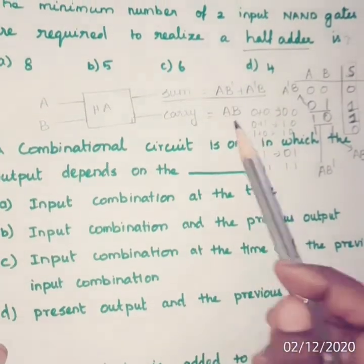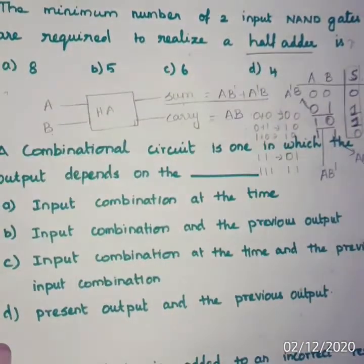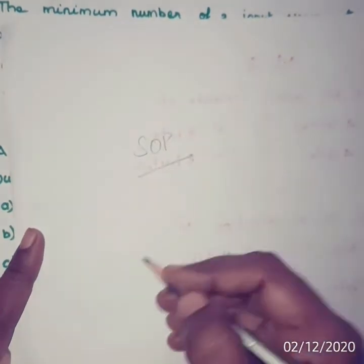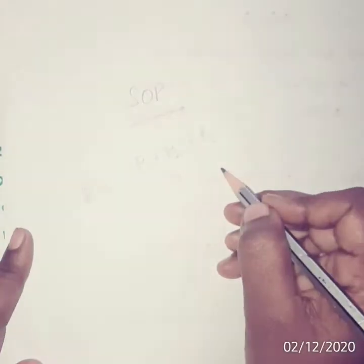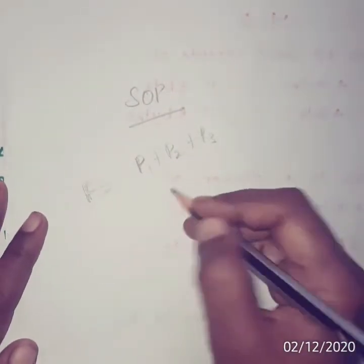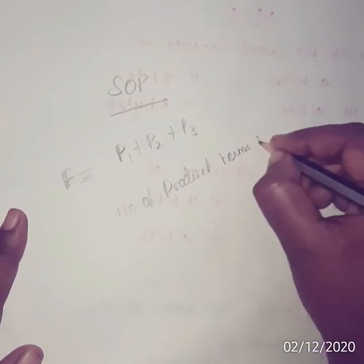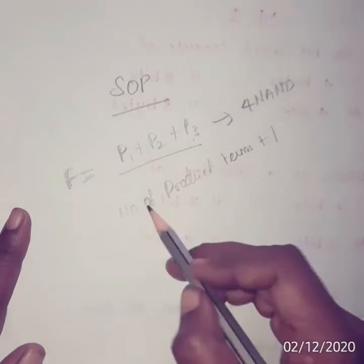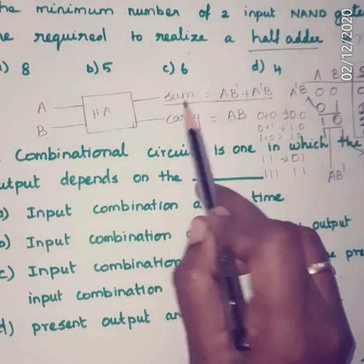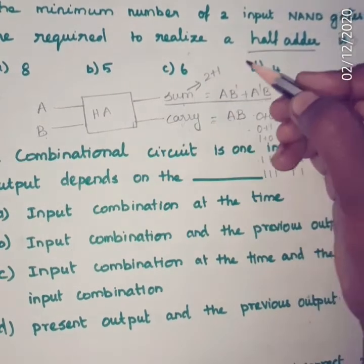We have to find the number of NAND gates to implement sum and carry. The simple trick is: if your expression is in sum of product form — product1 + product2 + product3 — and you implement it using NAND gates, the formula is: number of NAND gates = number of product terms plus 1. Here, the sum expression has 2 product terms, so to implement sum we need 2 + 1 = 3 NAND gates.